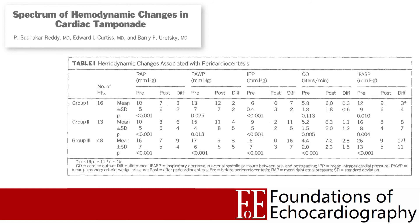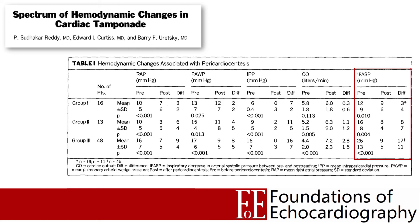Returning to Reggie's study of 77 patients with pericardial effusions: in Group 1, where pericardial pressure hadn't yet reached atrial pressure, the average drop in systolic blood pressure during inspiration was 12 mmHg. In Group 3, the sickest patients in whom pericardial pressure had already reached both atrial pressures, the average drop was 26 mmHg. In all three groups, once the effusion was drained, the systolic drop decreased to less than 10 mmHg.